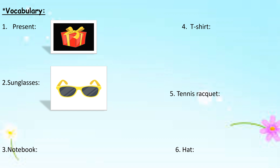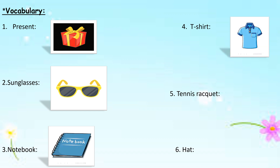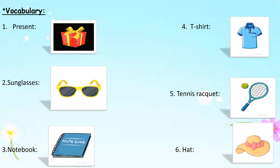Number three: 'notebook.' What is the notebook? Let's see — this is a notebook. Number four: 't-shirt.' What is the t-shirt? Let's see — it is a t-shirt. Number five: 'tennis racket.' What is the tennis racket? Let's see — this is a tennis racket. Number six: 'hat.' What's the meaning of hat? Let's see — this is a hat.